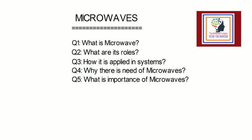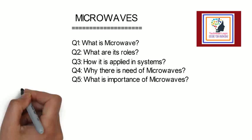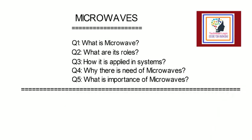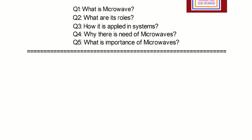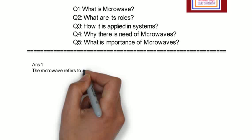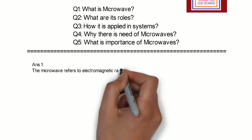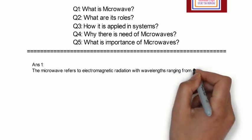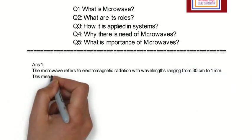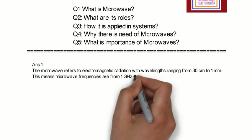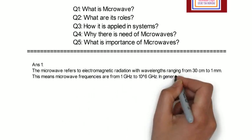Now we will study these questions in detail. So first question is, what is Microwave? The Microwave refers to electromagnetic radiation with wavelengths ranging from 30 cm to 1 mm. This means, Microwave frequencies are from 1 GHz to 10.6 GHz.